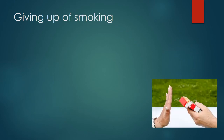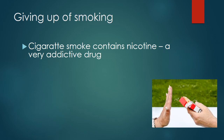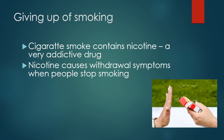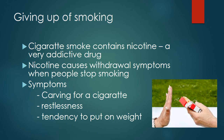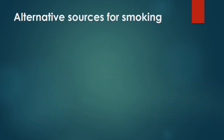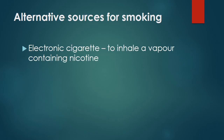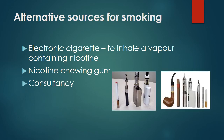It is essential to stop smoking, but giving up is not easy because cigarette smoke contains nicotine, a very addictive drug. Nicotine causes withdrawal symptoms when people stop smoking, such as craving for cigarettes, restlessness, and tendency to overeat. Alternative sources to help quit smoking include electronic cigarettes, which help inhale a vapor containing nicotine, nicotine chewing gum, and counseling.